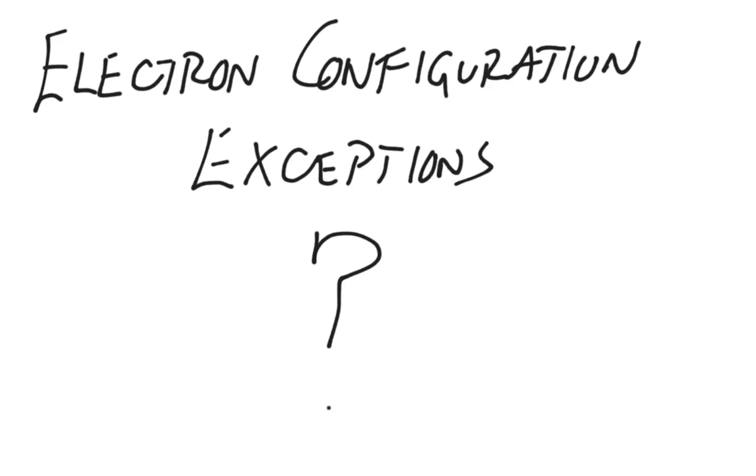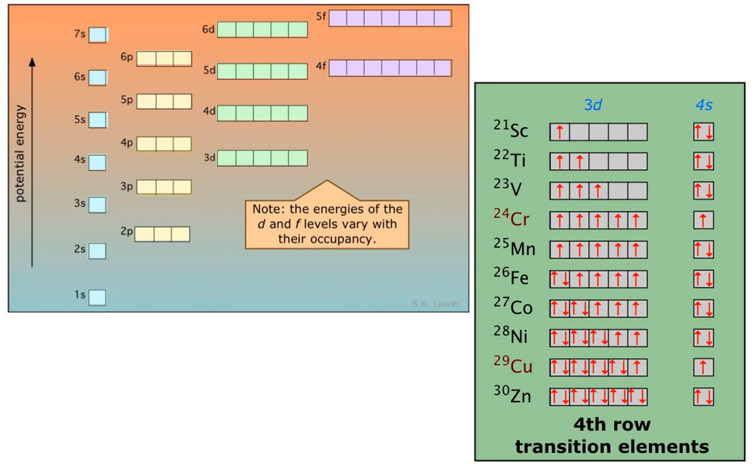But what Aufbau didn't take into consideration was that energy wasn't the sole factor that dictated where electrons went. In fact, that idea is manifested in two different elements. What he didn't take into account was that stability actually had quite a bit to do with it as well. He said that they would take the lowest energy, but he forgot to think about stability.